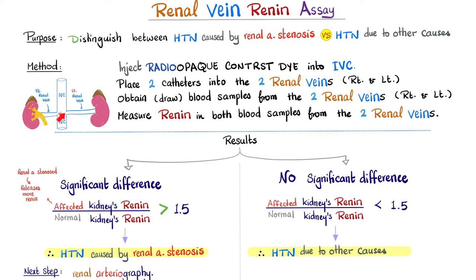To run the test, you inject a radio-opaque contrast dye into the inferior vena cava. Since the inferior vena cava connects to both the right and left renal veins, the contrast travels to each. You then place two catheters — one in the right renal vein and one in the left — and draw blood samples from each side to measure renin output from the right kidney and the left kidney.